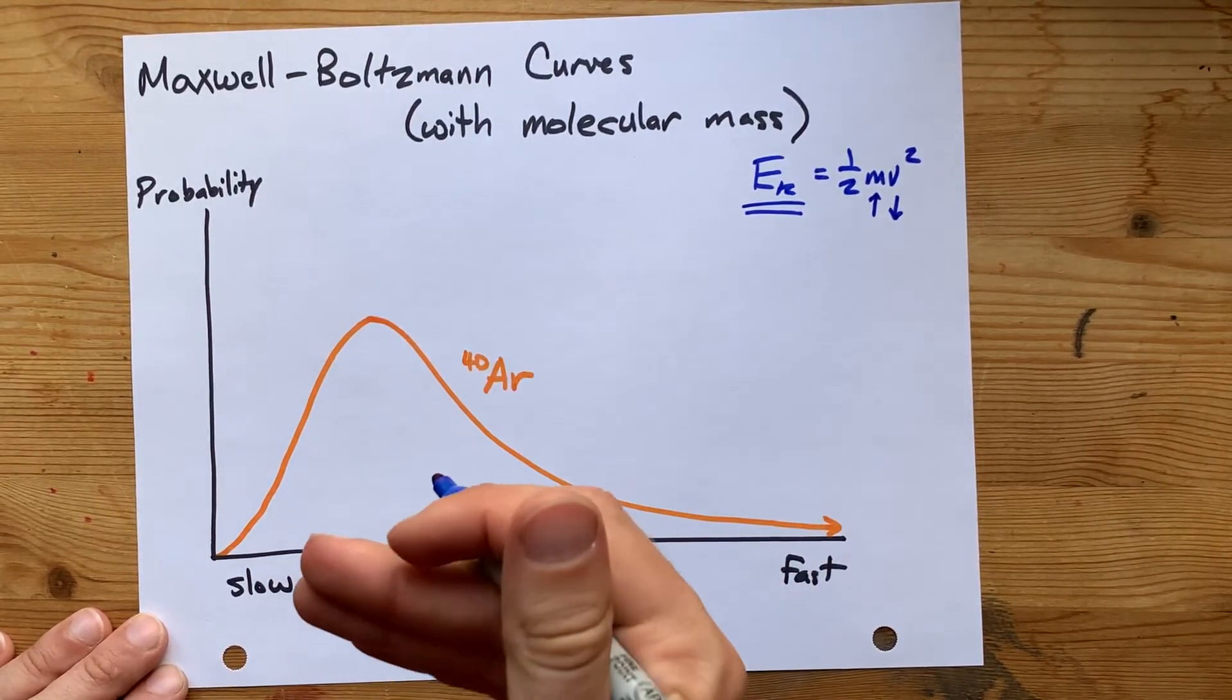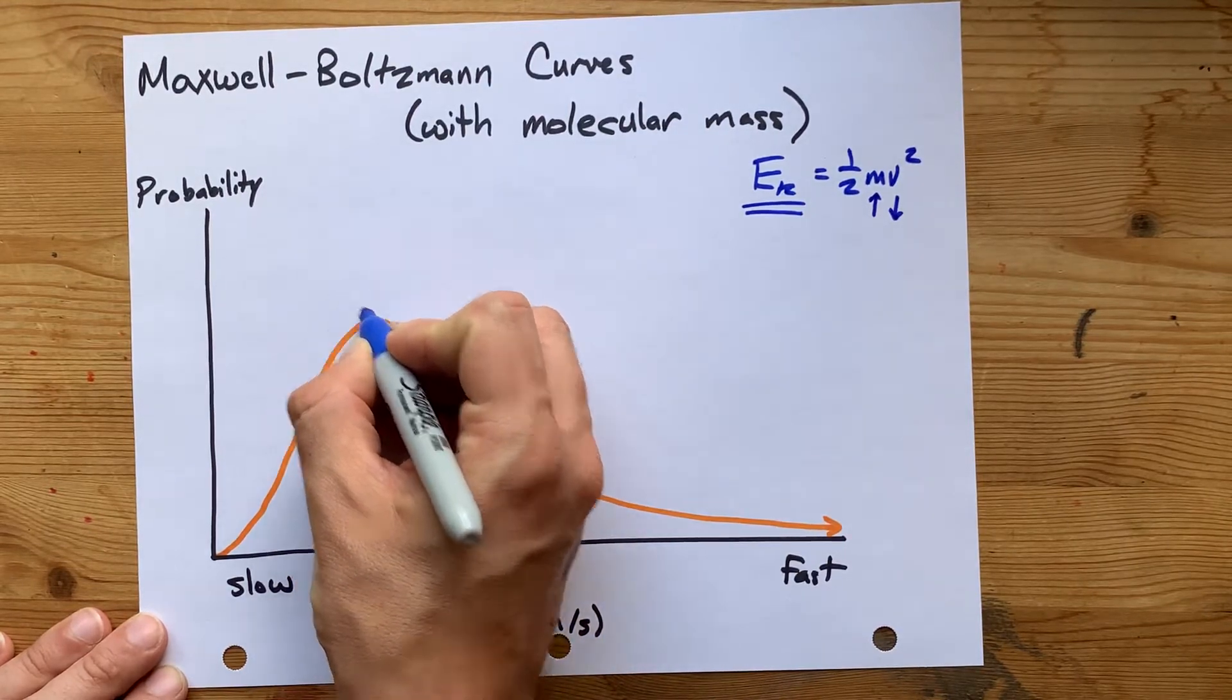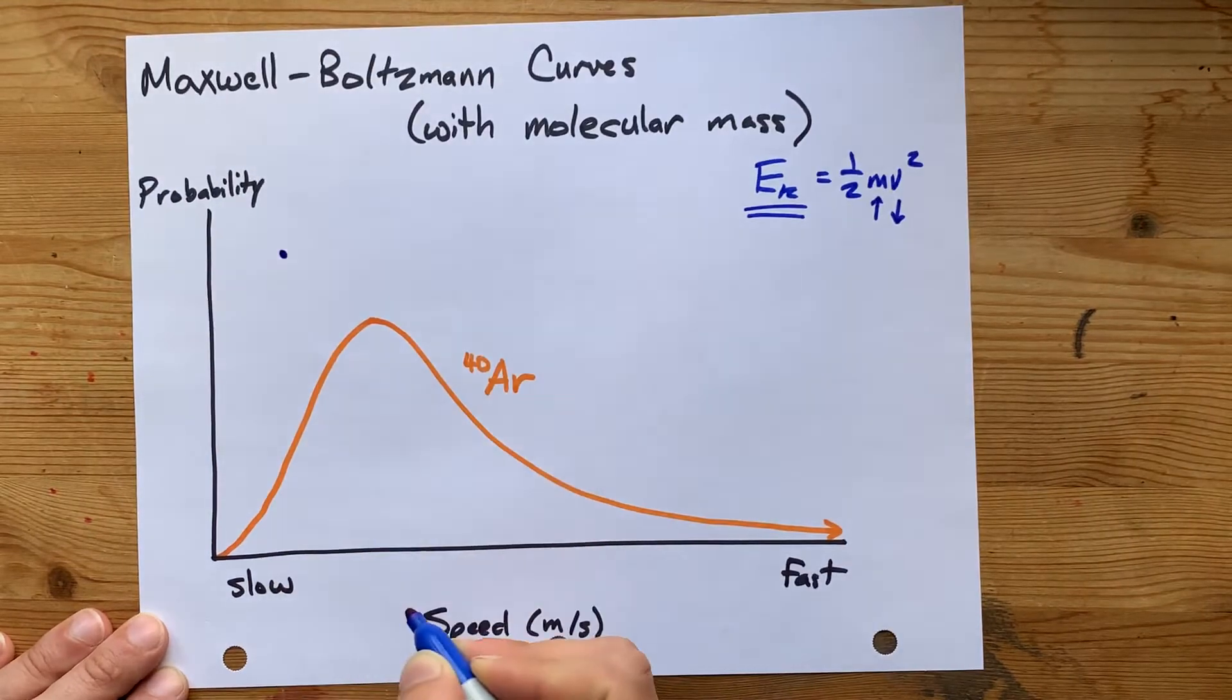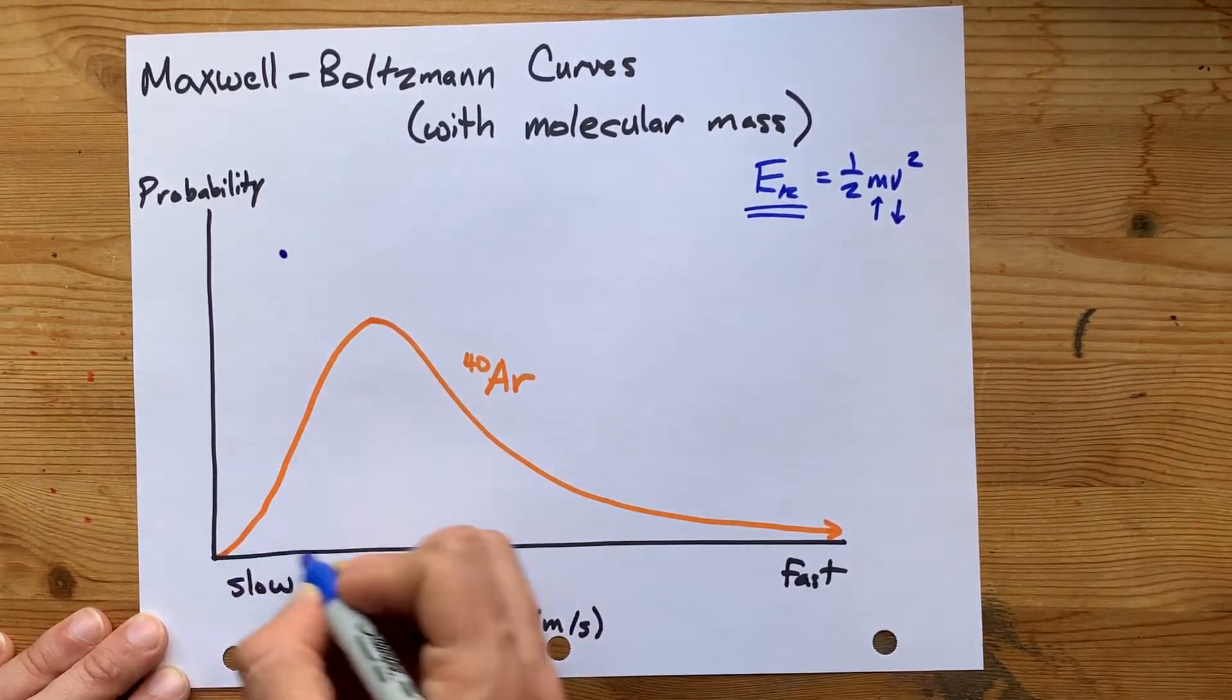So for heavier particles, I want the peak of your Maxwell-Boltzmann distribution to move up and to the left, more probably at slower speeds.